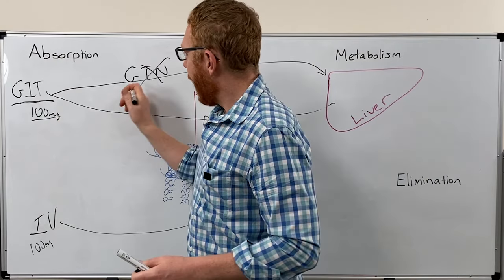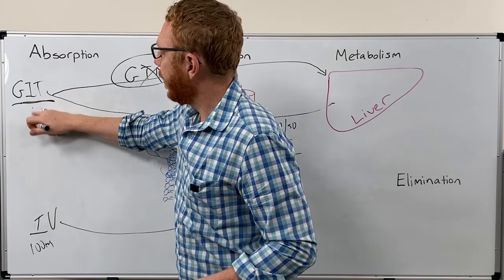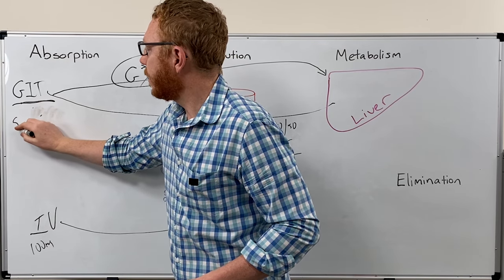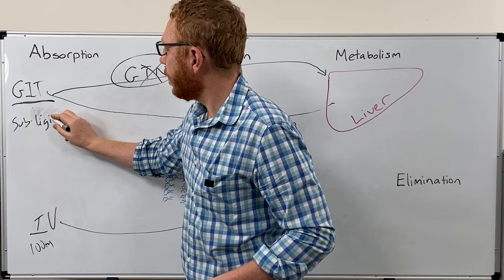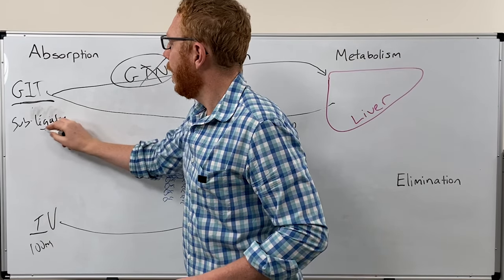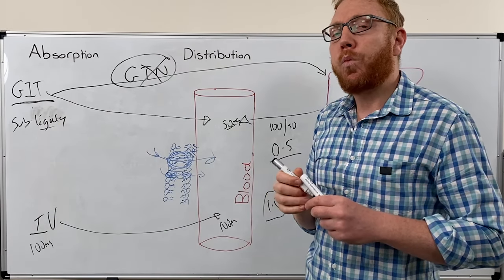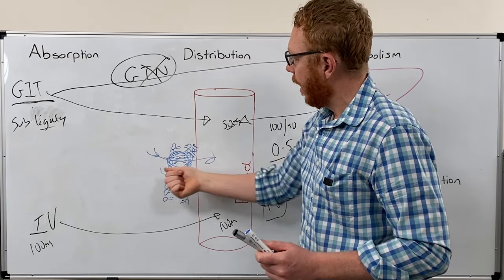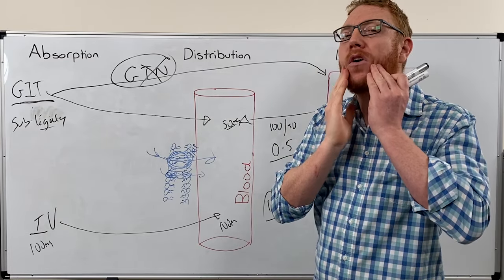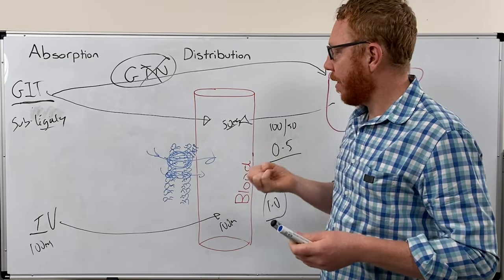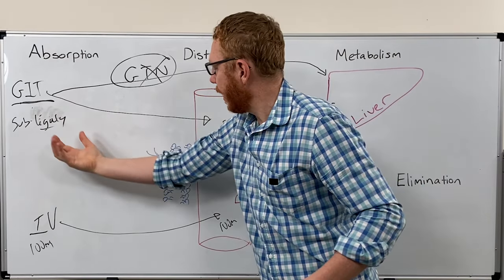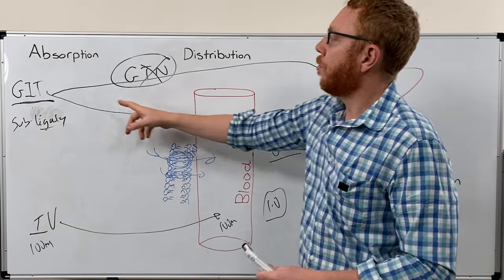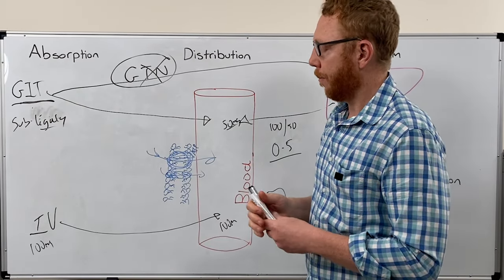Before we move on, you might ask about GTN. We do give GTN orally — we don't swallow it; we give it under the tongue, sublingually. How does that get absorbed? It has very good absorption capacity and can go across the membrane well. In the mucous membrane under the tongue — in the buccal region of your mouth — it can get absorbed. It has a rich blood supply, so it gets absorbed straight into the blood, giving it much better bioavailability sublingually than through oral or gastrointestinal means.